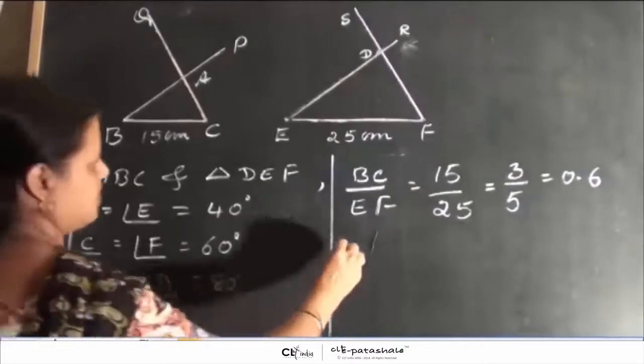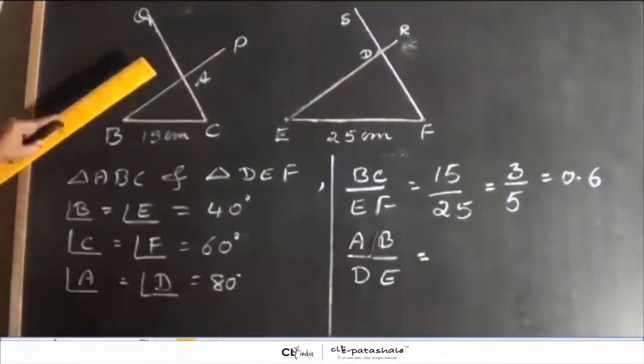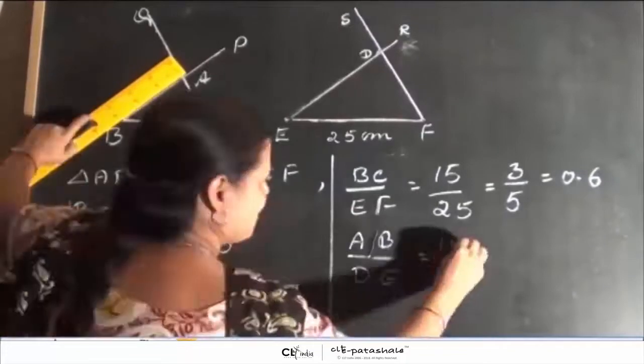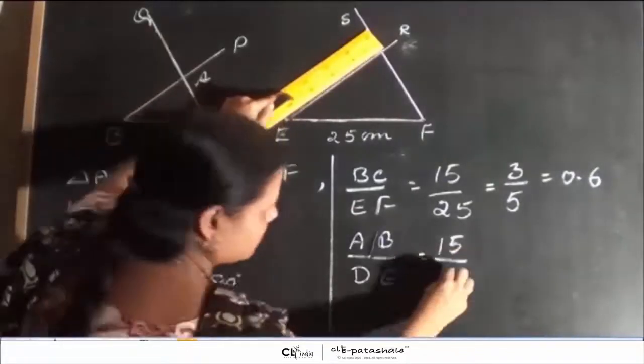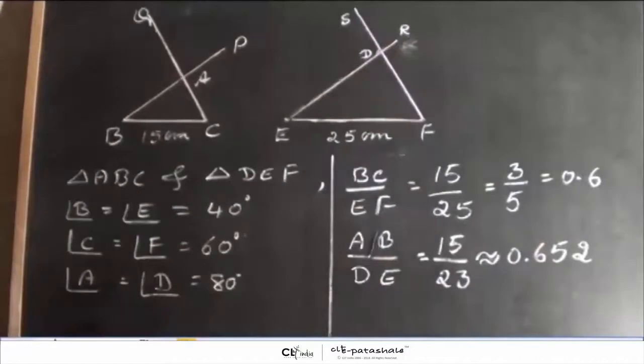Now, let us measure AB by DE which is equal to 15 by 23 is approximately 0.65.